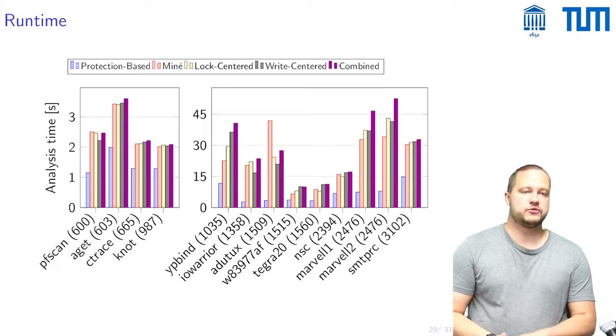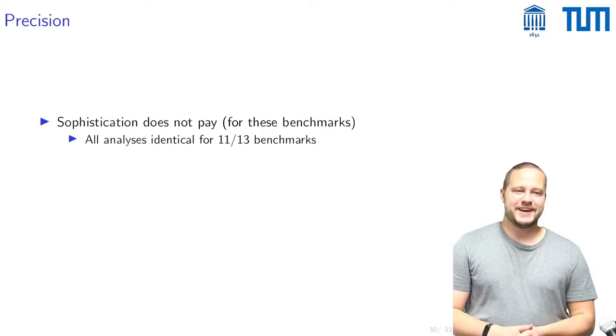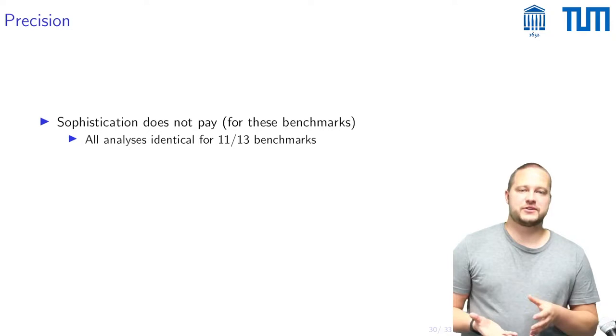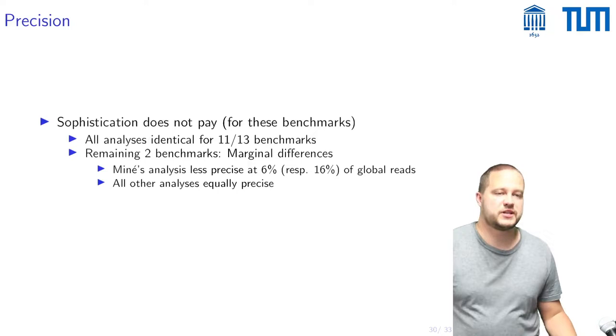So the other dimension which is interesting to compare along is precision and here our takeaway seems to be that sophistication does not really pay. For our benchmarks all analyses had identical results for 11 out of 13 of these and for the remaining two benchmarks there was only marginal differences where Miné's analysis was less precise at 6% respectively 16% of the global reads and all other analyses were equally precise.